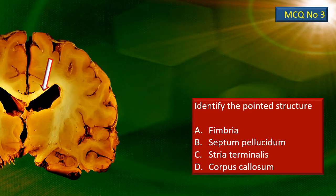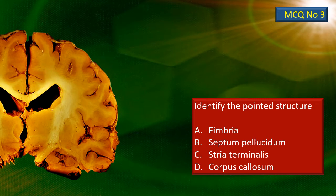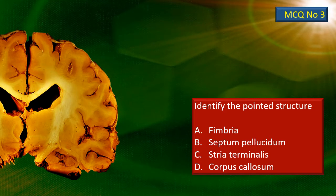MCQ number 3. Here is a coronal section where both the third ventricle and the lateral ventricles are seen. Identify the structure pointed by the flashing arrow. This is a coronal section roughly through the body of the lateral ventricle. The third ventricle is also seen medially.